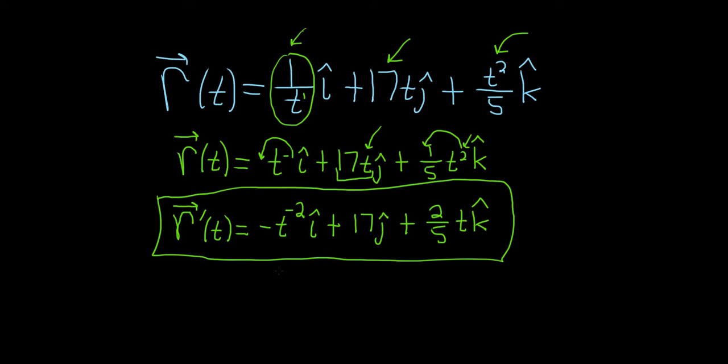You could, if you wanted to, rewrite this piece as negative 1 over t squared î, but it's not really something that's necessary.